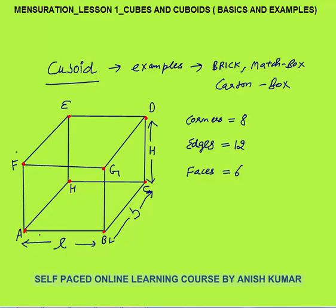How many edges do we have? An edge is the straight line that connects 2 corners — AB is an edge. If you consider this cuboid as a building, there are 4 edges on the floor: AB, BC, CH, and HA. These are the 4 edges on the floor.